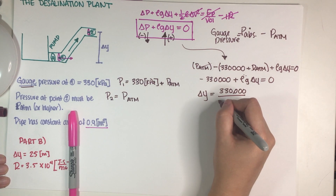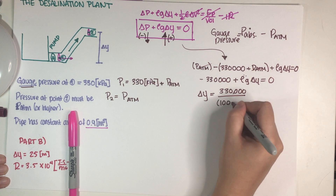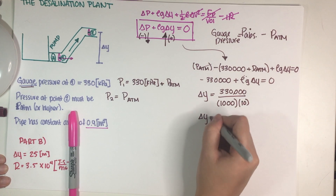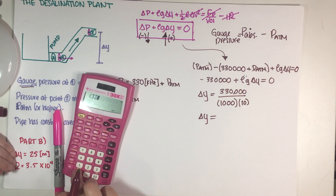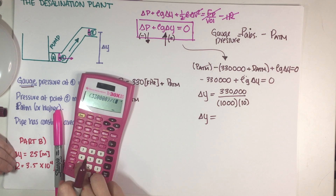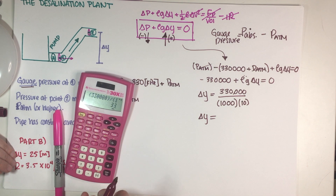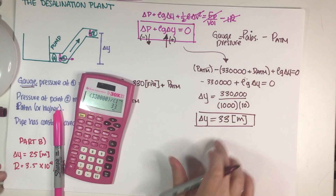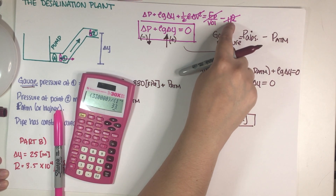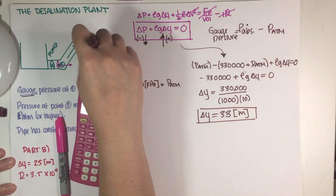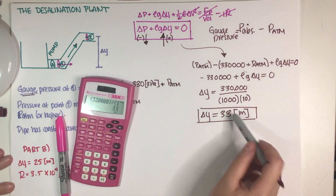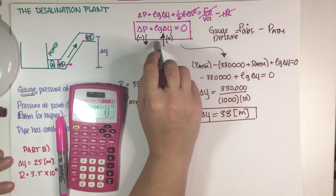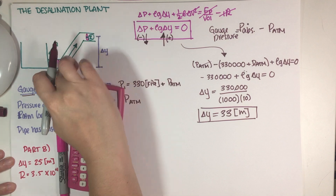Using rho for water equal to 1000 kilograms per cubic meter and g equal to 10, delta y comes out to 33 meters. So at 33 meters water will stop flowing — that is the absolute maximum height you can pump the water upward. Any height greater than 33 meters causes the equation to fail and water would stop flowing or reverse direction.